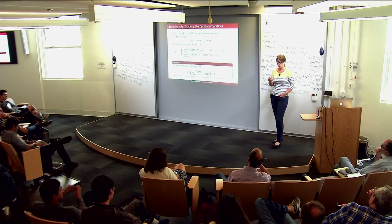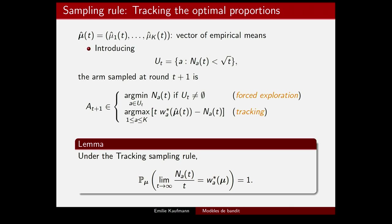Building on this, for the solution of the optimization problem we can compute for all mu: at time t we look at the current empirical mean estimates mu-hat, and first check whether any arm has been drawn fewer than sqrt(t) times. If so, we draw it — this is a form of forced exploration that guarantees empirical means converge to their true values. If no arm is underexplored, we choose the arm that maximizes t · w*_a(mu-hat) - N_a(t), computing the vector w*(mu-hat) at each step. This tracking rule ensures the fraction of draws of arm a converges to the target w*_a(mu).